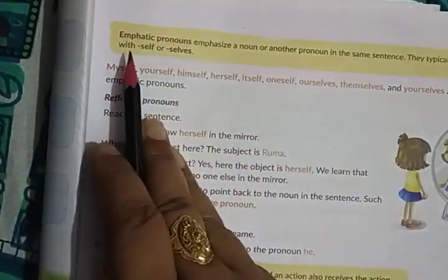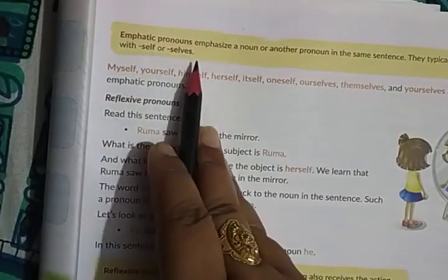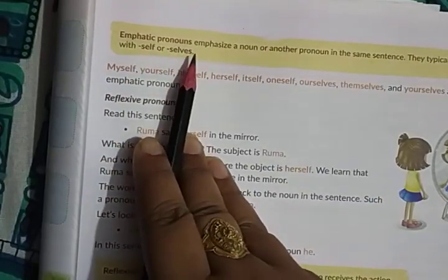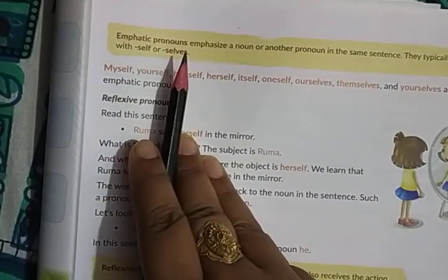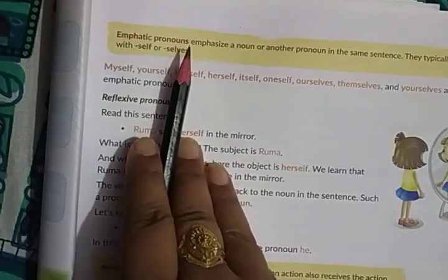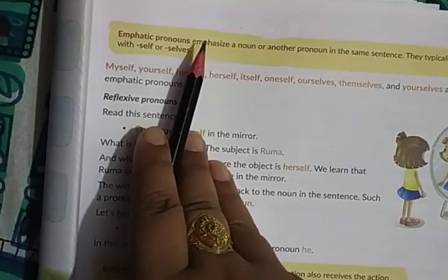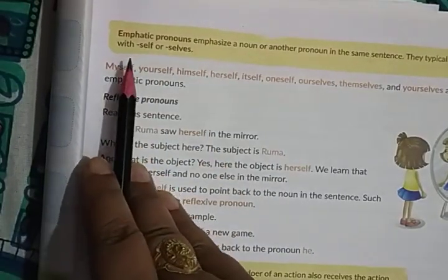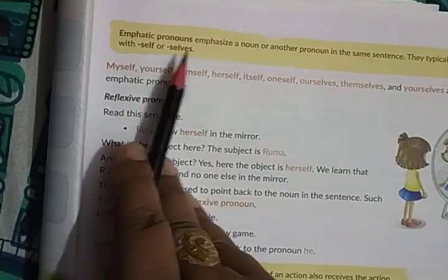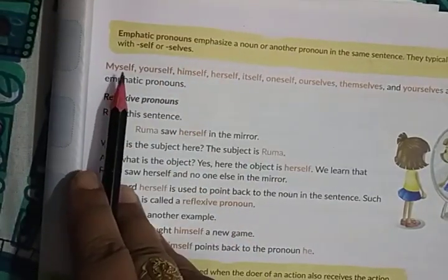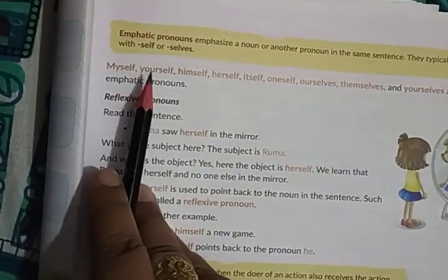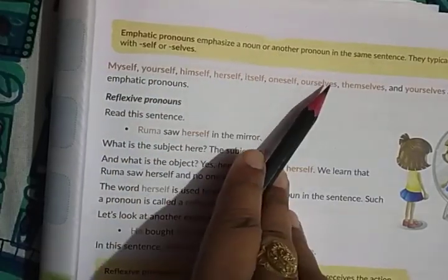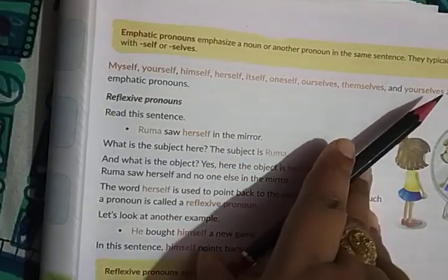Emphatic pronouns typically end with 'self' or 'selves.' Examples of emphatic pronouns: myself, yourself, himself, herself, itself, oneself, ourselves, themselves, and yourselves.